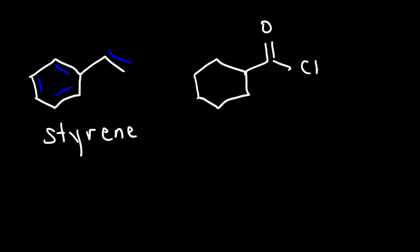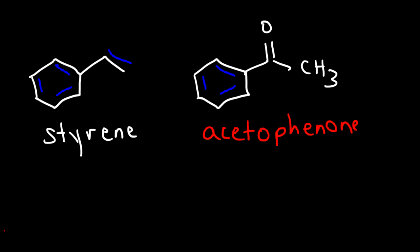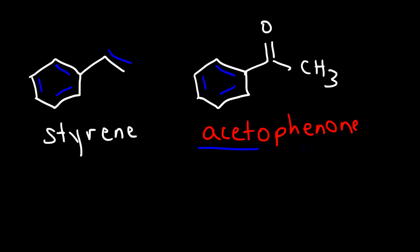What if we have a ketone next to a benzene ring? This is called acetophenone. When you hear the word aceto, think of two carbons — that's the aceto group. Phenol has to do with a benzene ring with six carbons, and the -one tells you we're dealing with a ketone.